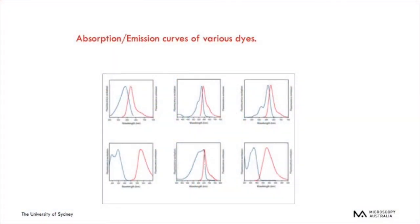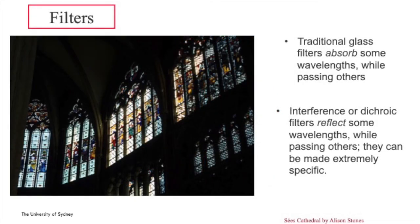During this lecture, we have discussed that you need to know the full absorption and emission curves of your molecules. This slide demonstrates a variety of dye absorption-emission curves, and you can see that most dyes have an overlap. We also discussed that excitation light is much stronger than the emitted light, so we need to detect the specific emission signal. To do that, we use filters. This beautiful image is of stained glass in Sayes Cathedral — the colours you see are the transmitted light, just as the colour in the red food colouring was transmitted light, while the rest of the white light spectrum is absorbed by the glass.